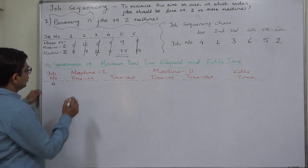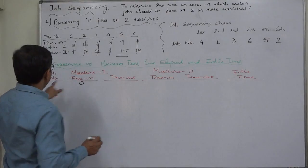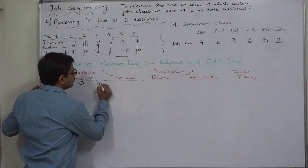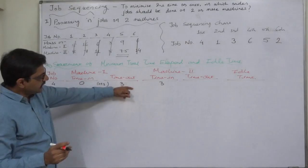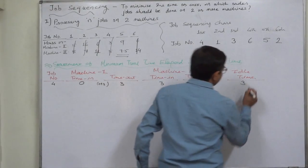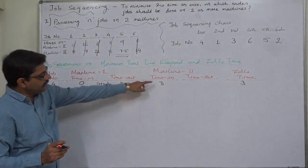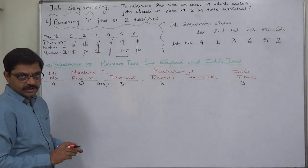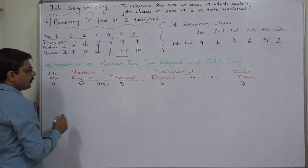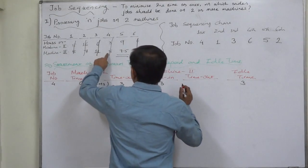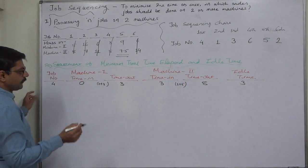Job number 4: the time in for this very first job on machine 1 is always 0. Job 4 requires 3 hours on machine 1, so 0 plus 3 gives 3 as time out, and this time out becomes time in on the second machine. For these 3 hours the second machine has to wait, so this 3 hours becomes the idle time of machine 2. Job 4 requires 5 hours on machine 2, so 3 plus 5 gives 8 as the time out on machine 2 for job number 4.